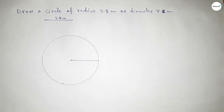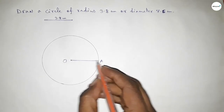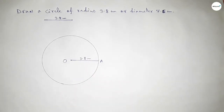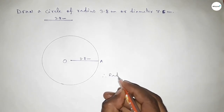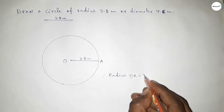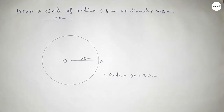Now joining this, which is the radius of the circle. Taking center O and point A, so OA equals 3.8 centimeters. Therefore, radius OA equals 3.8 centimeters. That's all. Thanks for watching — if this video is helpful to you, please share it with your friends.